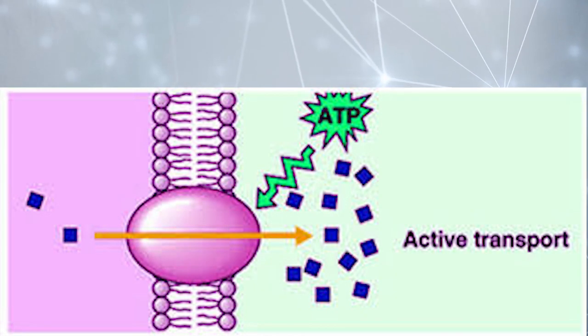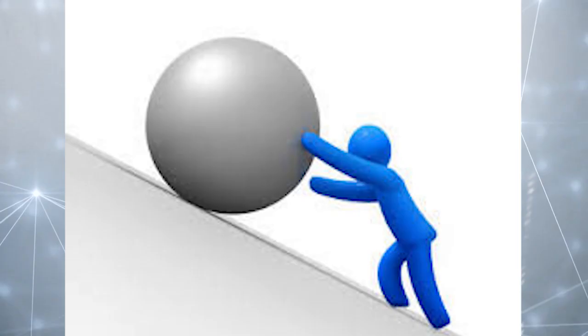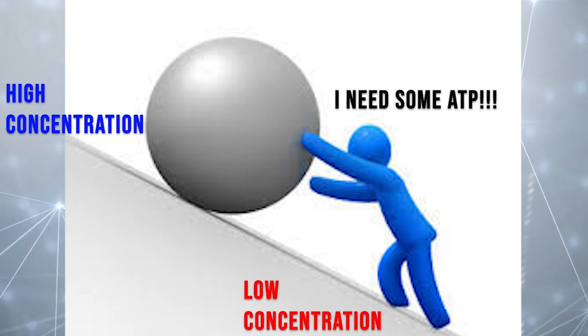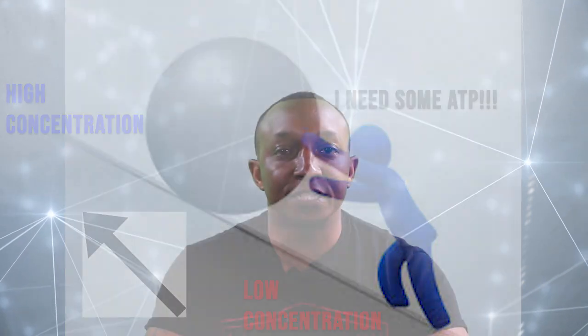Active transport requires energy in the form of ATP to move particles from an area of low concentration to an area of high concentration. I like to think of it as rolling a ball up a hill. You would need energy to roll the ball up the hill from a low concentration to a high concentration.